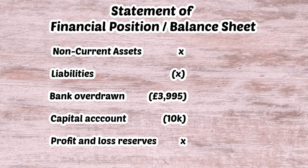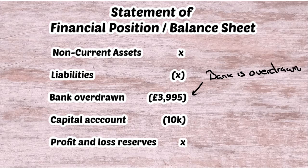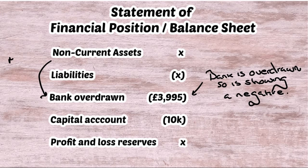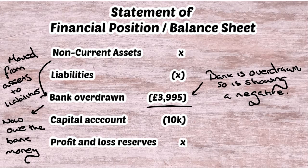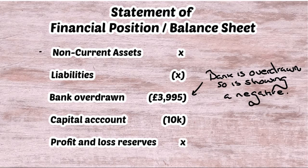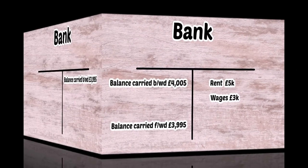On the statement of financial position, non-current assets appear at the top — tangible and intangible assets — followed by liabilities. Because the bank is now overdrawn by £3,995, it moves down from the assets section and now forms part of total liabilities, sitting just above the capital account and profit and loss reserves. This is because we now owe money to the bank.